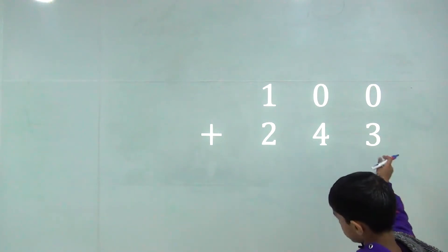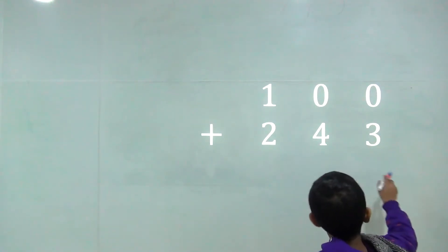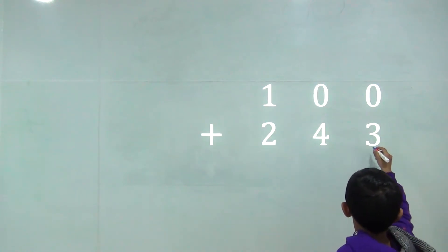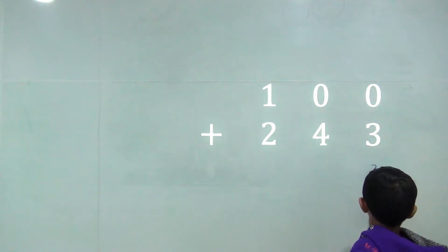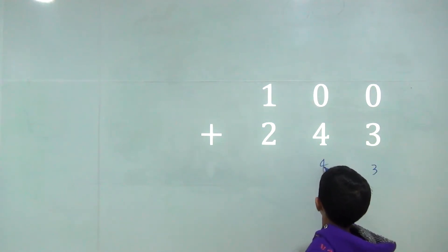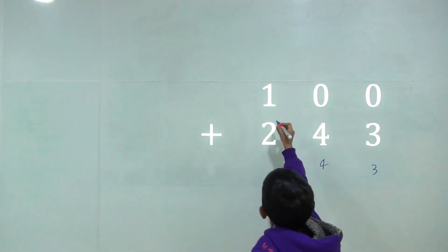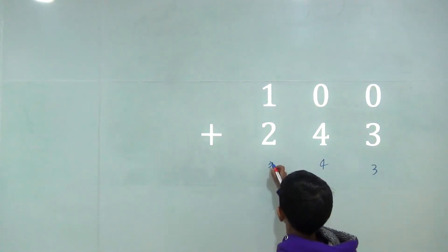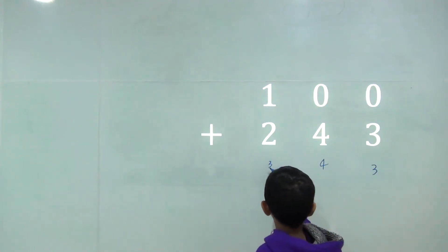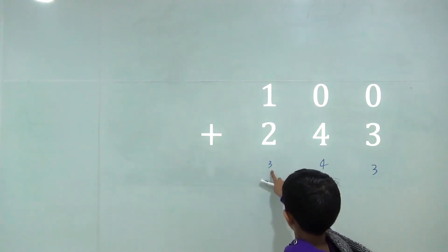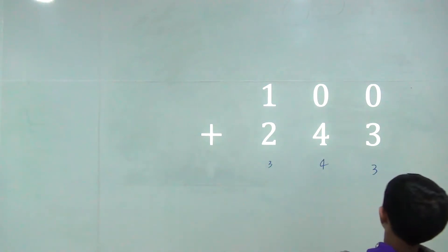Three digit number plus three digit number. Zero plus three is equal three and zero plus four is equal four and one plus two is equal three. So the answer would be three hundred and thirty-four.